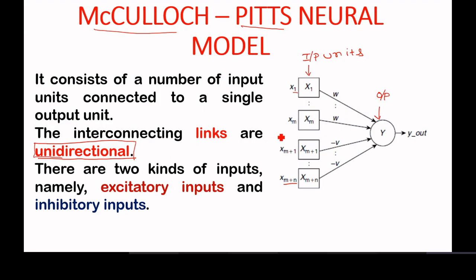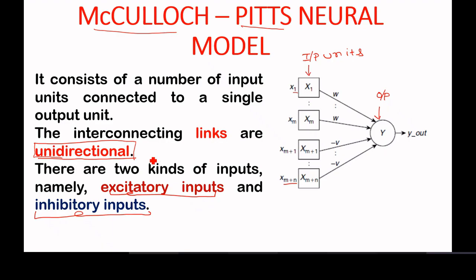In the inputs, there are two kinds. You can classify the total inputs into two types: one is excitatory inputs and the second one is inhibitory inputs. So we will see what excitatory and inhibitory inputs are. The inputs are classified based on the weights of the interconnection — one is excitatory and the other is inhibitory.